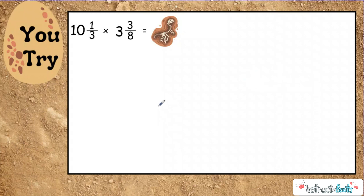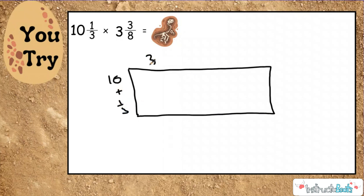So hopefully you just paused and now we're trying it. So let me go ahead and draw my big open array here. And here I'm going to do 10 plus 1/3. Up here I'll do 3 plus 3/8. And now we just multiply our partial products. So here we have 30. This is going to be 38, which I know is going to be a mixed number in a second. Here, 3 times 1/3, that's just 1.